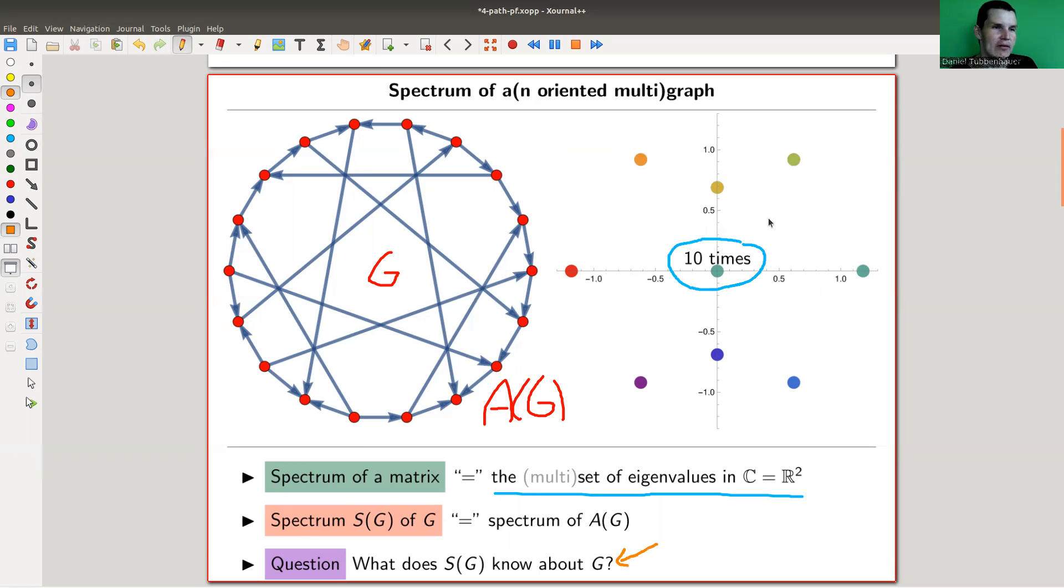In general, you should have counting multiplicities as many eigenvalues as vertices. So here you have one, two, three, four, five, six, seven, eight plus 10, so 18 eigenvalues.